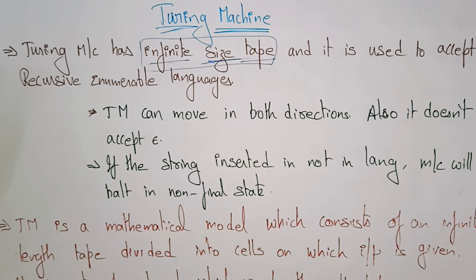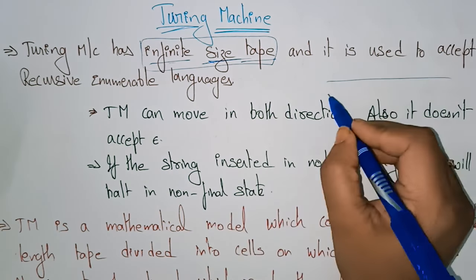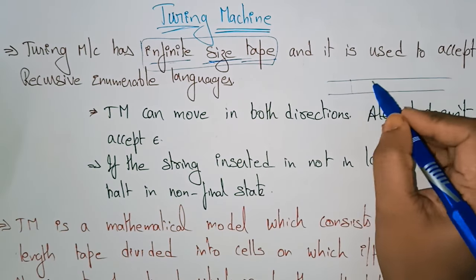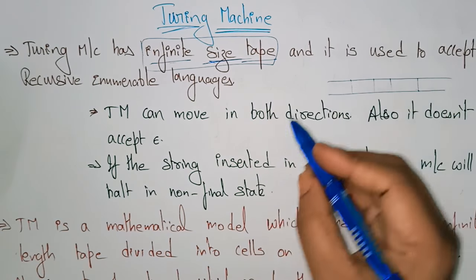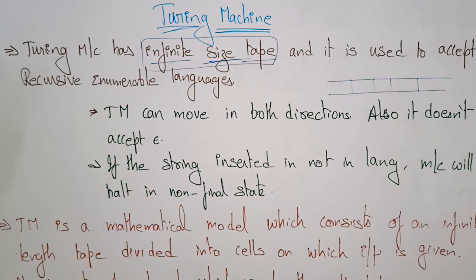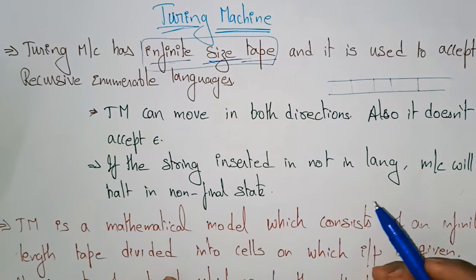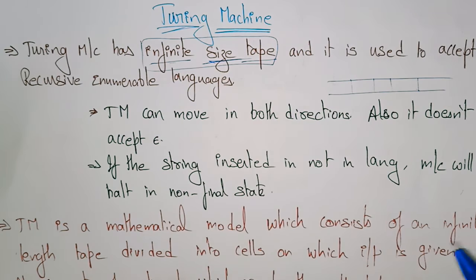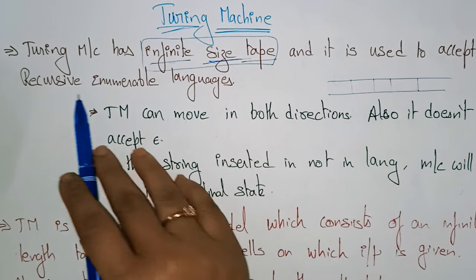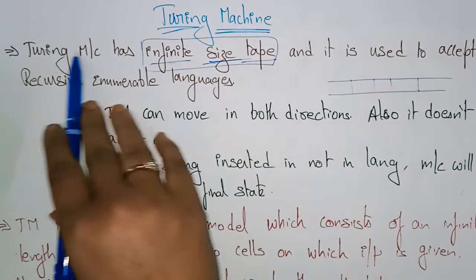The Turing Machine has an infinite size tape. So far in the pushdown automata, whatever we have seen, that is a stack concept we are using. But here in the Turing Machine, you have to remember that we are using the concept of tape instead of stack. And it is used to accept the recursive enumerable languages.